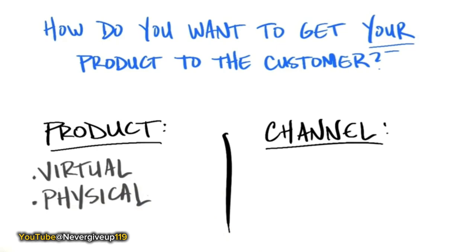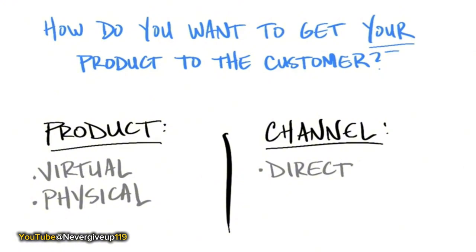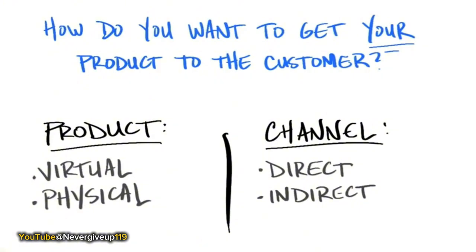The next thing you need to ask is: what's going to be my distribution channel? Is it going to be direct — offering it on a website you own, or having direct salespeople that work for you? Or is it going to be indirect — putting it on a third-party website like Amazon or a web aggregator, or physically using system integrators, VARs, or a retail store? Select what you think will work for your product. There really is no single answer — as we go further, you'll see how to choose what's right for your company.